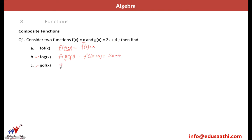For the third part, g(f(x)): the output of f(x) is x. For g(x), if the input is x, the output is 2x + 4. So the answer is 2x + 4. To summarize: f(f(x)) = x, f(g(x)) = 2x + 4, and g(f(x)) = 2x + 4 for these three composite function questions.